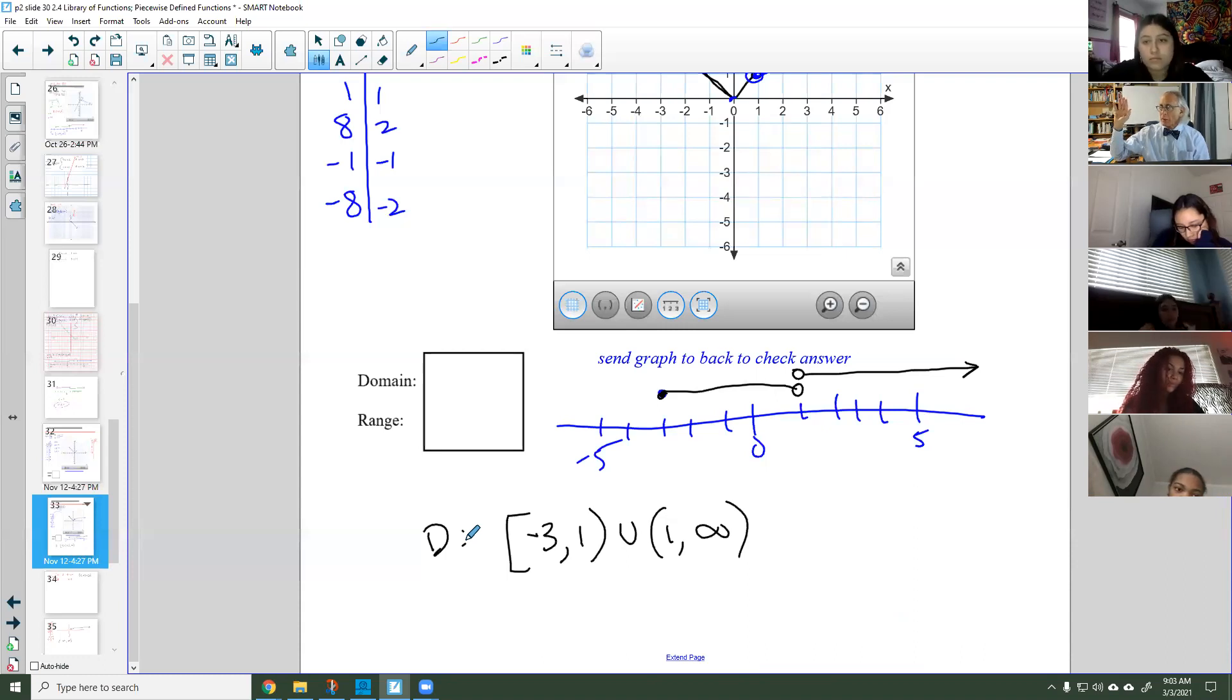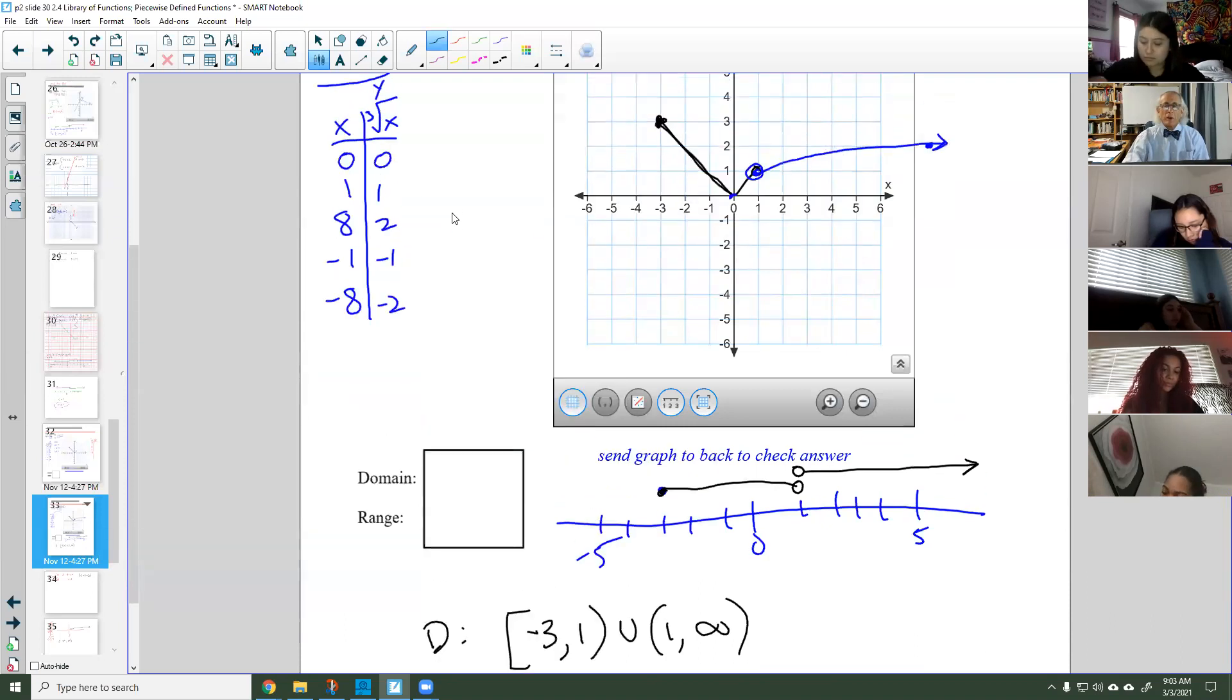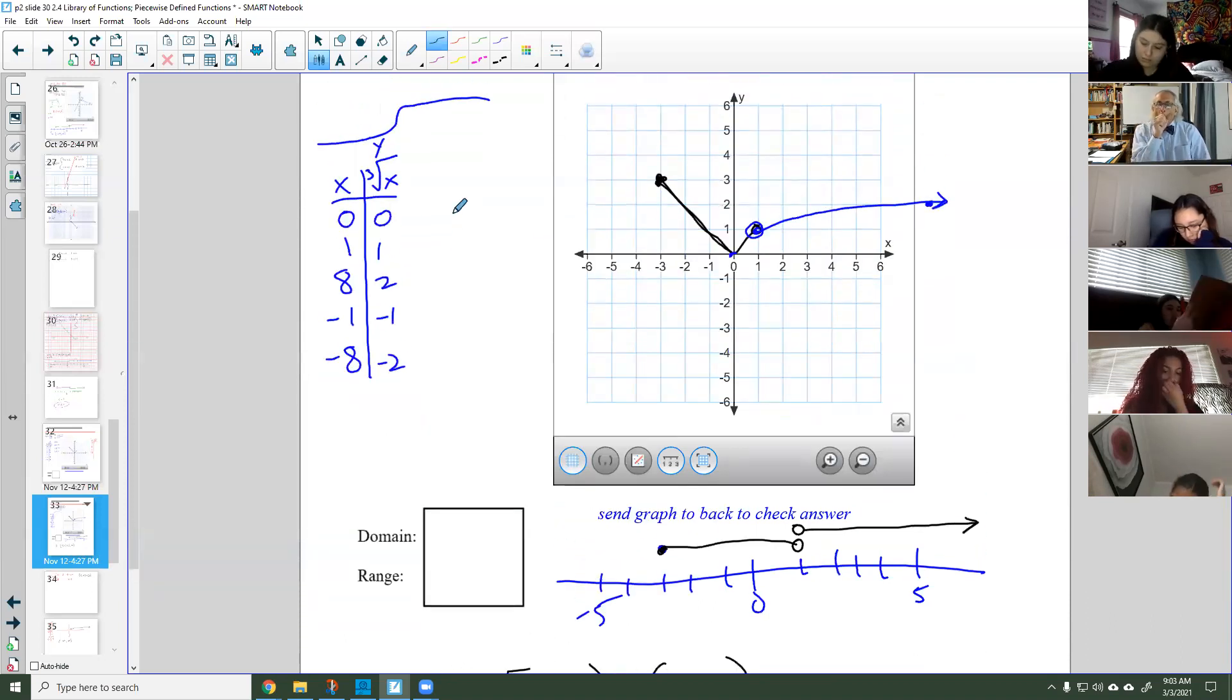Let's do the range by looking at the picture. So Isabella, what is the lowest y value in my graph? Um, would it be zero? It would be zero. And is it included or not included? Included, I think it is.